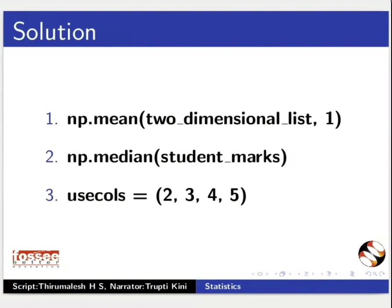And the answers: to get the mean of each row, we just pass 1 as the second parameter to the function mean — np.mean(two_dimensional_list, 1). We use the function median to calculate the median of the list — np.median(student_marks). Third, to specify the particular columns of a file, we use the parameter usecols=(2, 3, 4, 5).